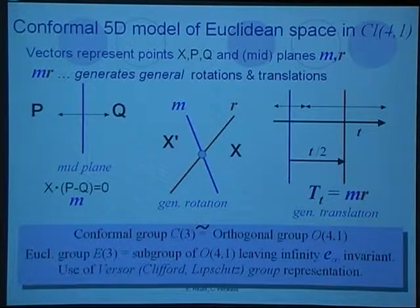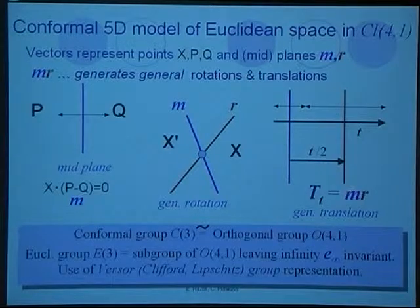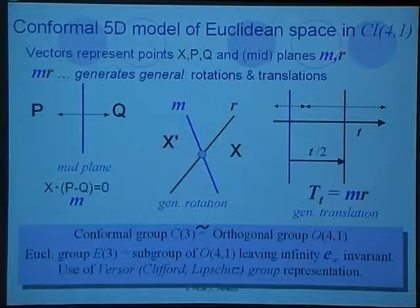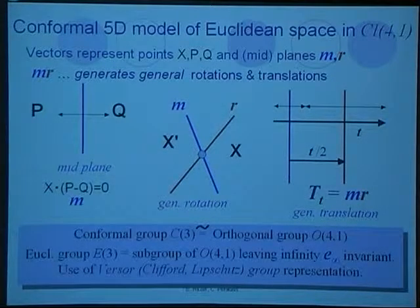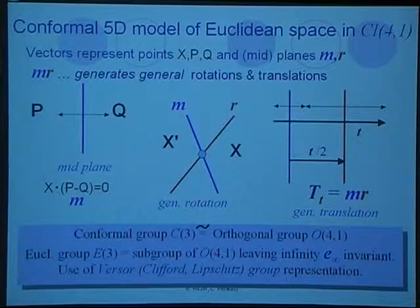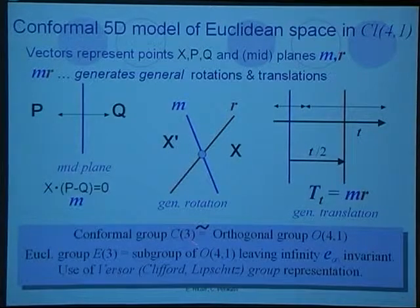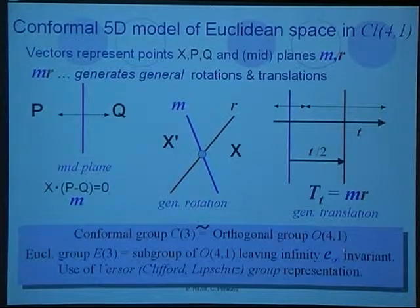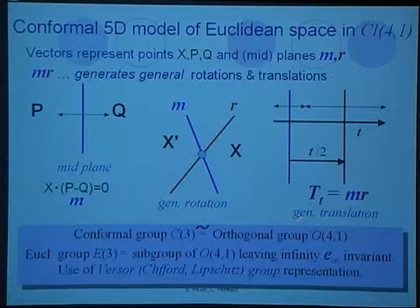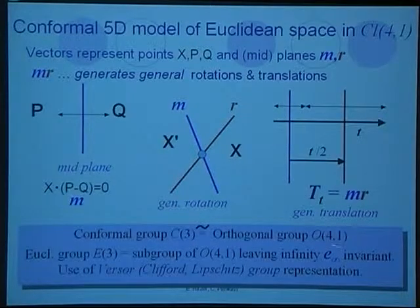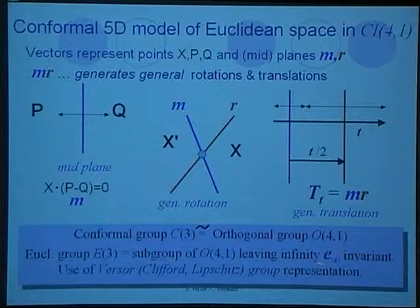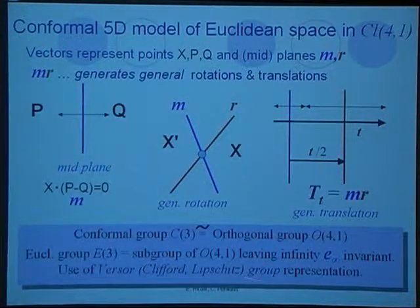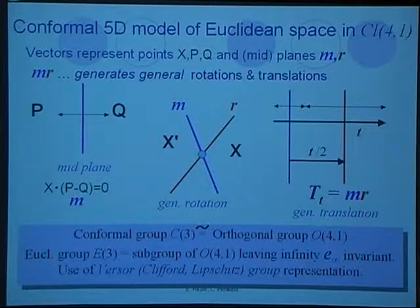This expresses a generalized angle. The translation, like the rotation, is expressed by the product of the two plane vectors in five dimensions. This comes from the fact that the conformal group C3 is isomorphic to the orthogonal group of this space, and the Euclidean group E3 is a subgroup of this orthogonal group, signature 4-1, leaving the vector at infinity invariant. We use the versor, also called Clifford or Lipschitz group representation to implement these groups.